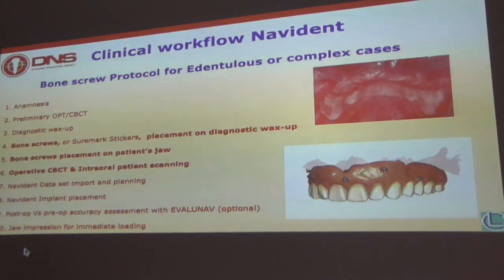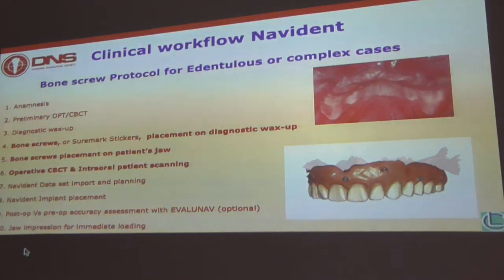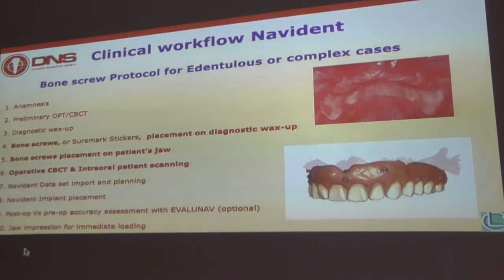The point is that with bone screws, you get accuracy during implant placement. The problem Sanjay was explaining very nicely is that if you have teeth, you can use them as tracing — but when you take them out, you lose the accuracy and cannot check if you're still accurate. With bone screws, as soon as you place them in the mouth, you can check even during the operation and surgery if you are accurate or not. That's why I'm using them.